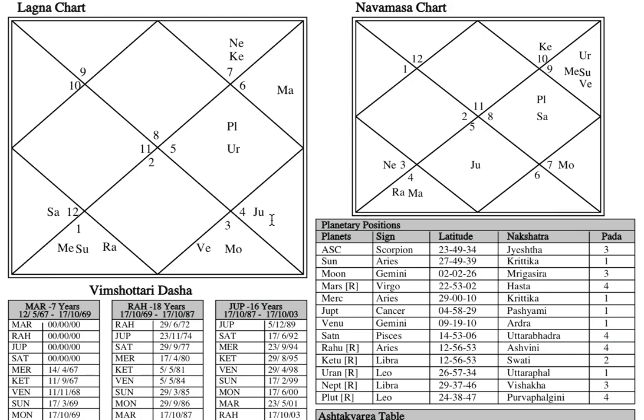Jupiter antardasha is the last antardasha in Saturn mahadasha, going on till 17th October 2022. This should be a good time for his married life. After that, his Mercury mahadasha starts for 17 years from 17th October 2022 to 17th October 2039. Mercury is relatively more challenging than Saturn, so after October 2022 his problems will further increase. That is how life is — full of ups and downs, and we should be able to recognize when there are ups and downs.